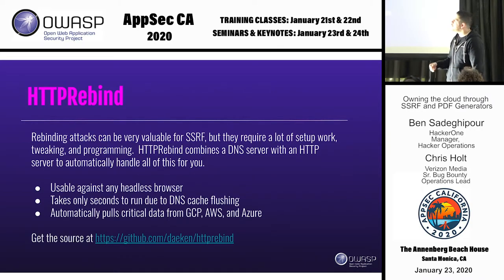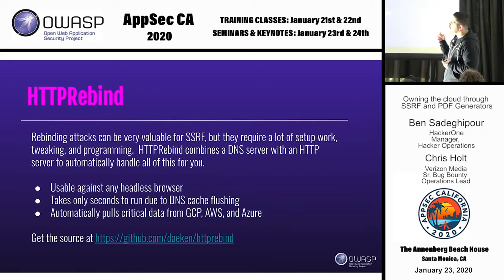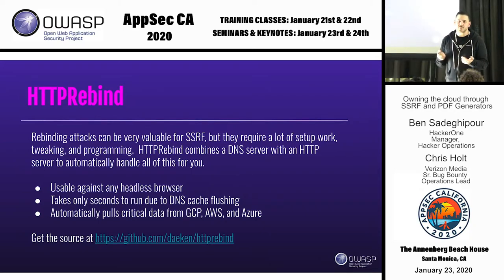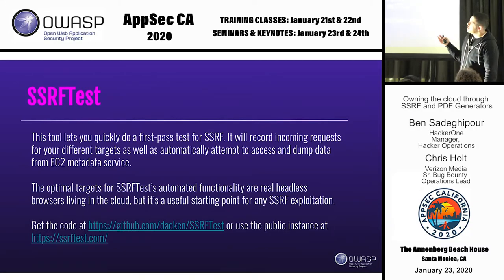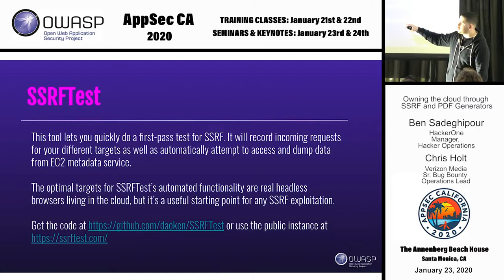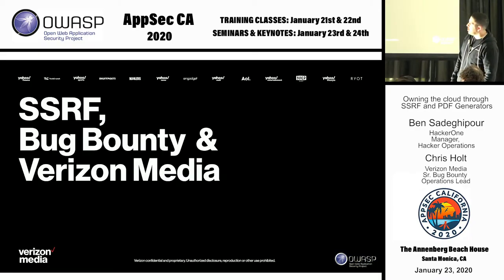SSRF tools: two tools came out of our work for this talk. The first is an SSRF rebind tool — if you want to do the same stuff as we did for the Snapchat case, it's on GitHub, open source, on Dakin's repository. It automates everything I talked about. The second is SSRF test, which fires through a bunch of payloads that have worked for us — things important to test when it comes to SSRF. You can use the hosted instance at ssrftest.com, or install it yourself and check if you can exploit any SSRFs.